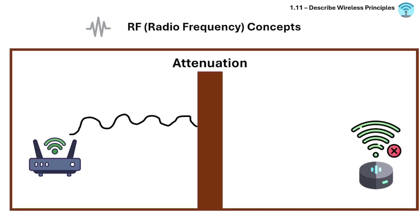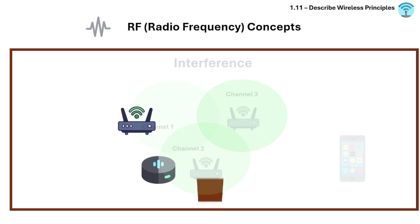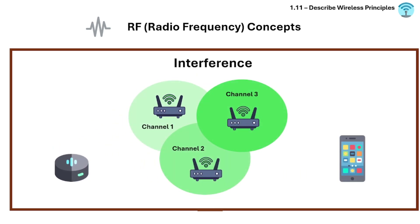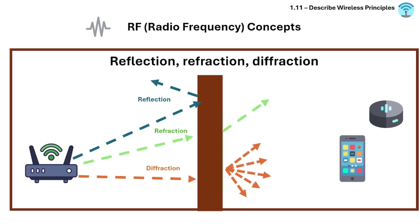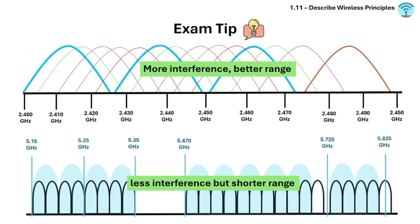Key RF concepts to remember: Attenuation is signal loss over distance or through walls. Interference is caused by overlapping channels or devices operating on the same frequency. Reflection, refraction, and diffraction describe how RF signals behave when hitting surfaces. Exam tip: 2.4 GHz has more interference but better range, while 5 GHz has less interference but shorter range.